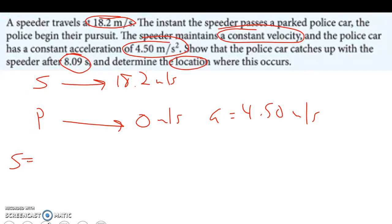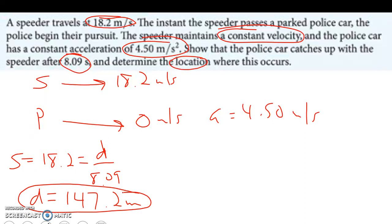The speeder is a constant velocity of 18.2. If I take 18.2, distance I don't know, but time is 8.09 seconds, I can solve for distance. My distance is just going to be speed of 18.2 times my time of 8.09, and the distance here is 147.2 meters. That's how far the speeder is going to get before he gets pulled over based on our time frame.